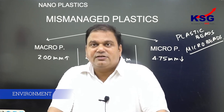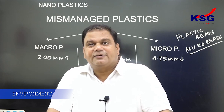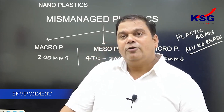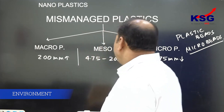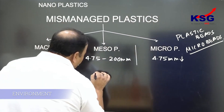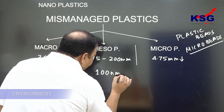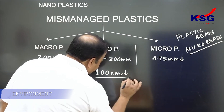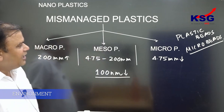But more detrimental than microplastic is another form of plastic which is a growing concern today, and that is called nanoplastic. Nanoplastic has a size of less than 100 nanometers.